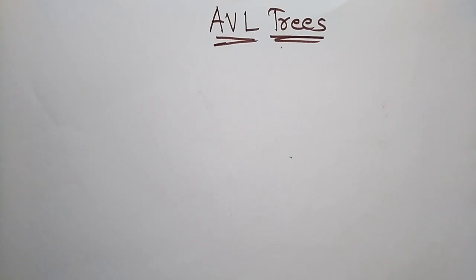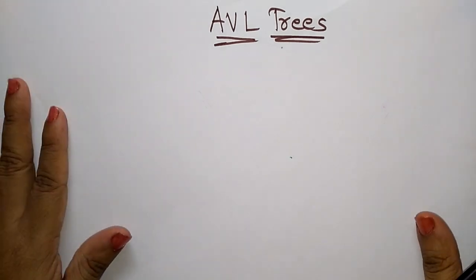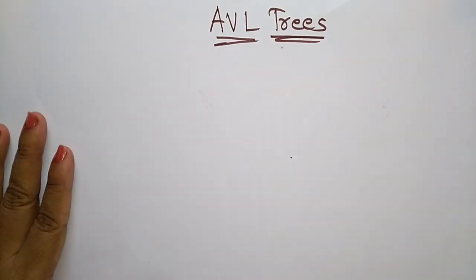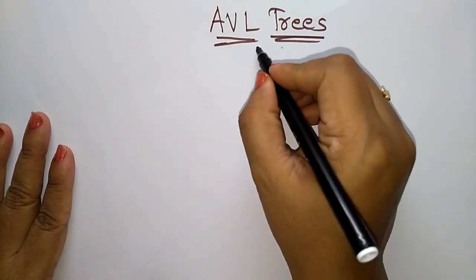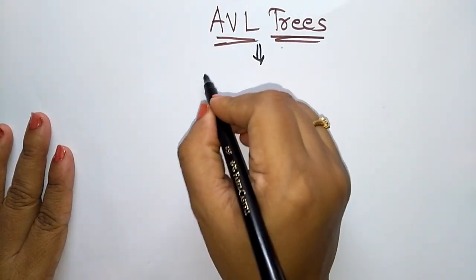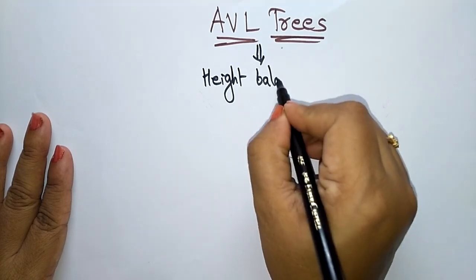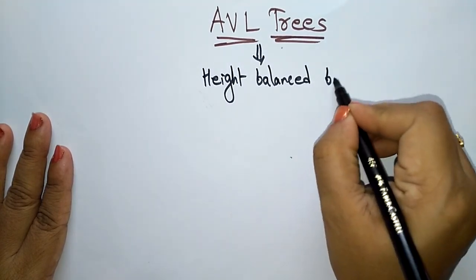Welcome back students. Coming to the next topic in data structures: AVL trees. So far we have discussed binary trees and binary search trees. Now let us see AVL trees, which we call height balanced binary trees.